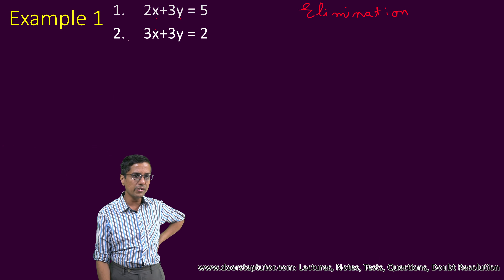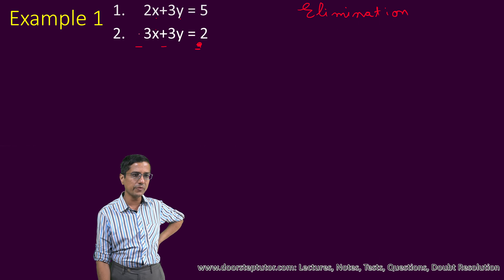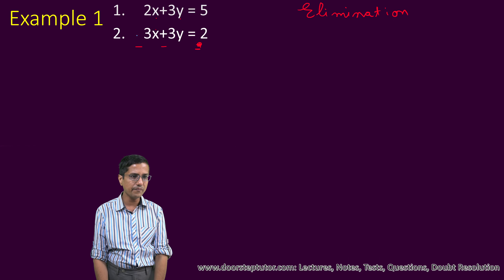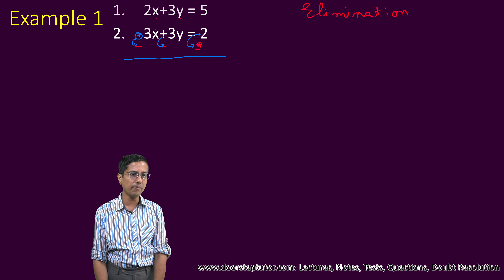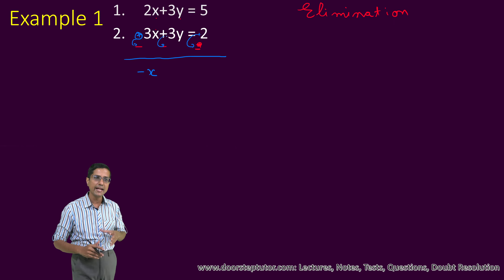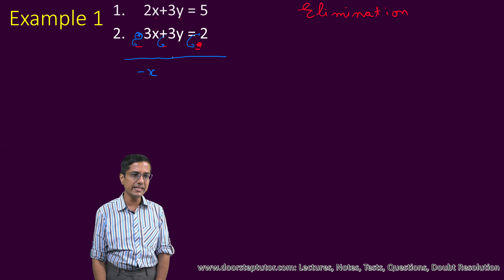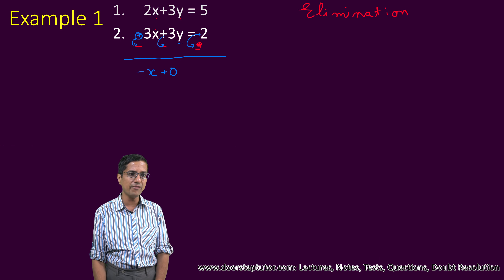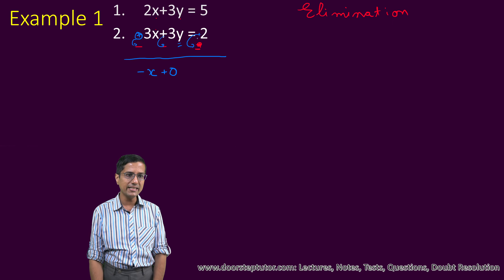Here what we will do is subtract the second equation from the first equation, which means that each term of the second equation will be negated. So this was a plus here and it became a minus. Similarly, we do 2x minus 3x, which becomes minus x. Then 3y minus 3y — notice what has happened here. Because we have subtracted 3y from 3y, that becomes 0. So we have eliminated y from this equation. And this is 5 minus 2, which is equal to 3.